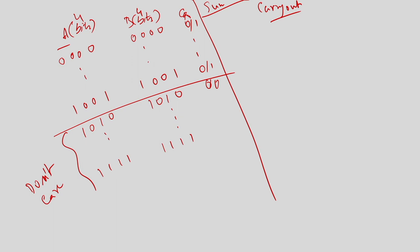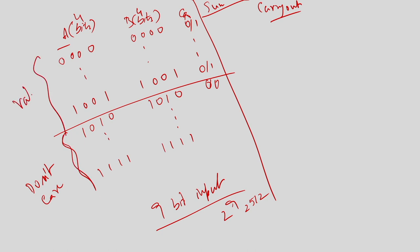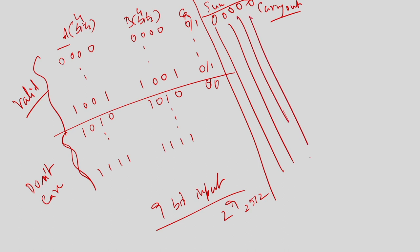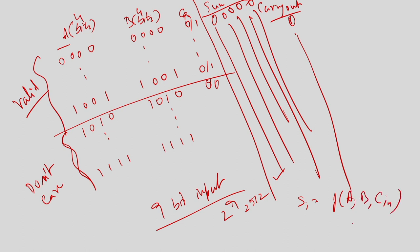Now, given 9 inputs, you can understand there are 9-bit inputs, which means 2 to the power 9 equals 512 possible combinations. Out of those, some are do-not-care and the rest are valid. You can always identify how many are valid and how many are do-not-care, and correspondingly you will get 4 bits of sum and a carry out. You can write a function for each bit of sum — sum 0, sum 1, and so on — as a function of A, B, and carry in, and minimize the expression to create an adder.